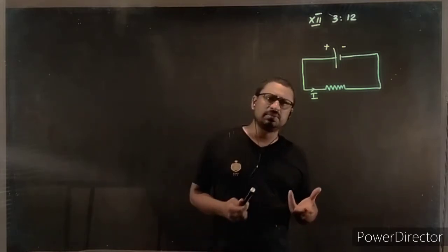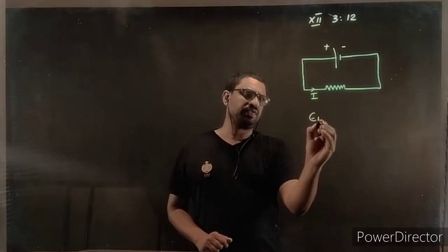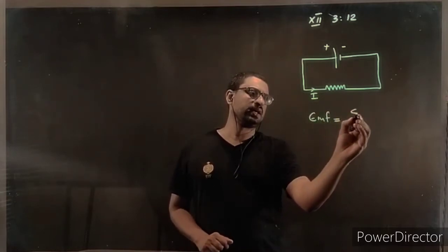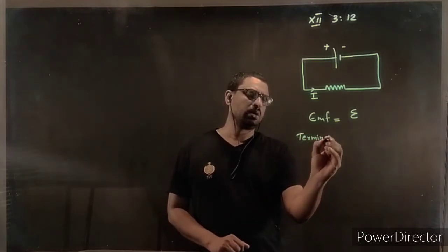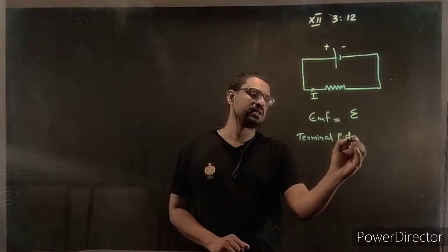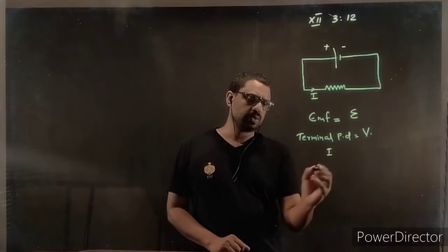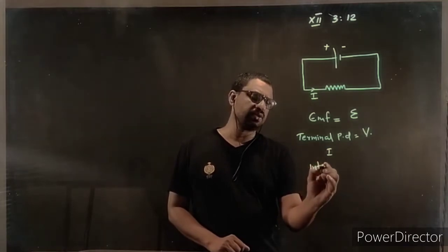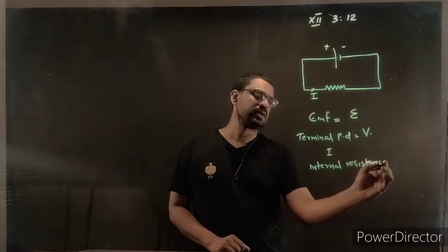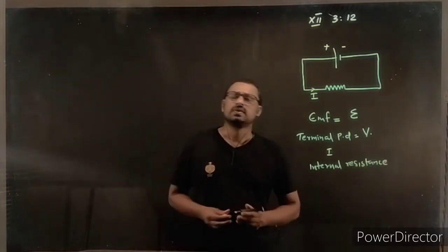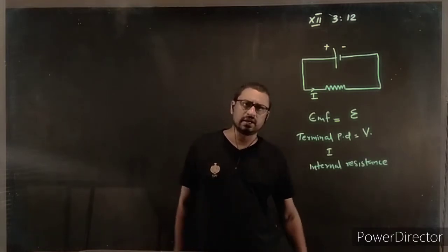Now we should understand some terms. One is EMF, represented by E. Next is terminal potential difference, represented by V. Then current, as you know. And next is internal resistance. All these are the terms we are going to study in this class.